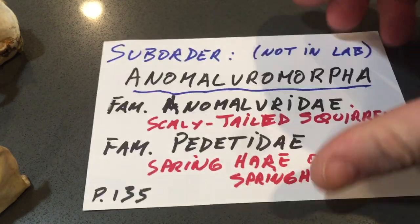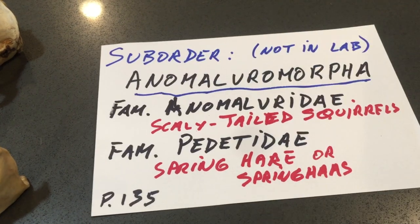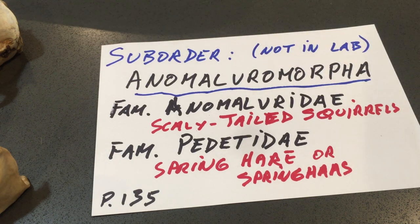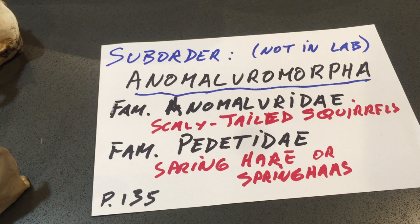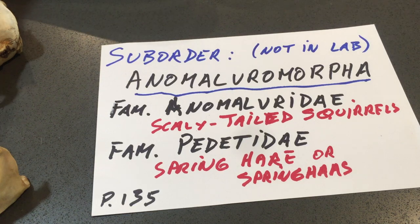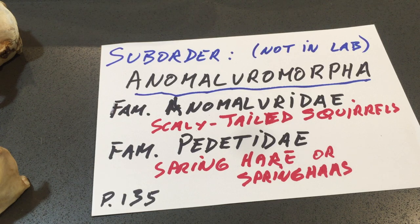That's all I have to say about the Anomaluromorpha. One other thing: they do have a hystricomorphous jaw condition. At least in the Peditidae, they have an extremely large infraorbital foramen, like you see in the hystricomorph rodents, which we'll be dealing with when we look at the porcupine.